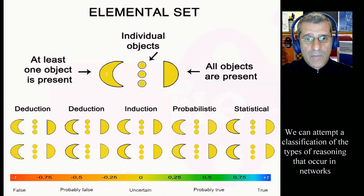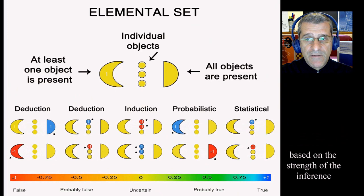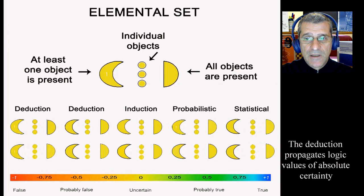We can attempt a classification of the type of reasoning that are occurring in networks based on the strength of the inference. The deduction propagates logic values of absolute certainty. In induction, absolute values are only reached when all the values of the object nodes are known.